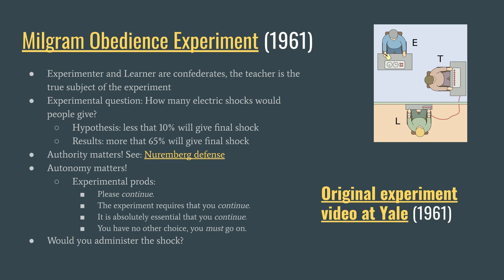When Milgram formulated this experiment, he estimated that maybe 10% of teachers would administer the final shock. He surveyed colleagues and graduate students, who also estimated less than 10% — some less than 1%. How could you keep administering a shock to someone yelling 'please stop, I want out'? All the psychologists thought no one would go through with it. In fact, when you run the experiment, something like 65% of people will continue shocking the person past the point where they've gone silent, all the way to the final 450-volt shock.